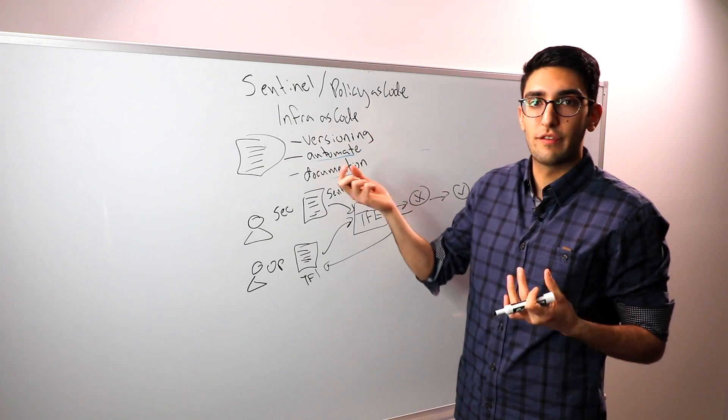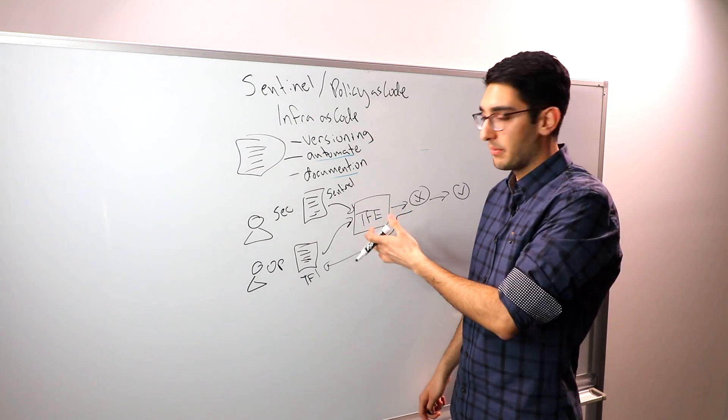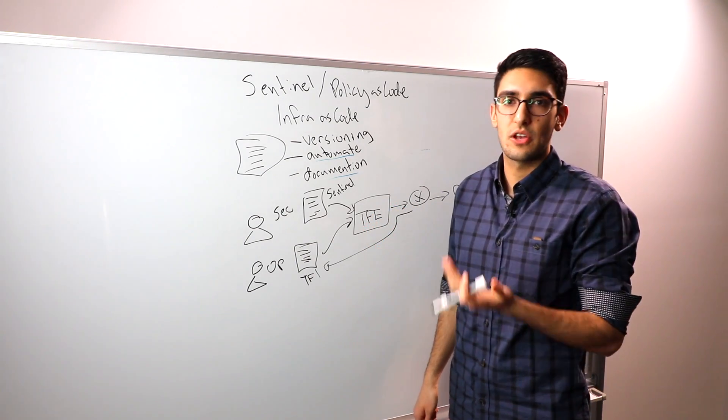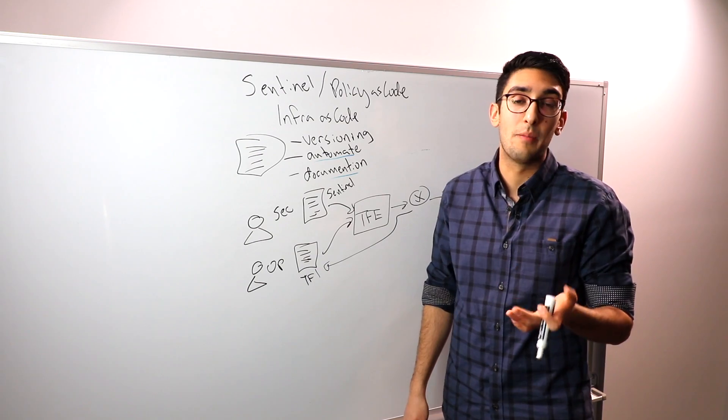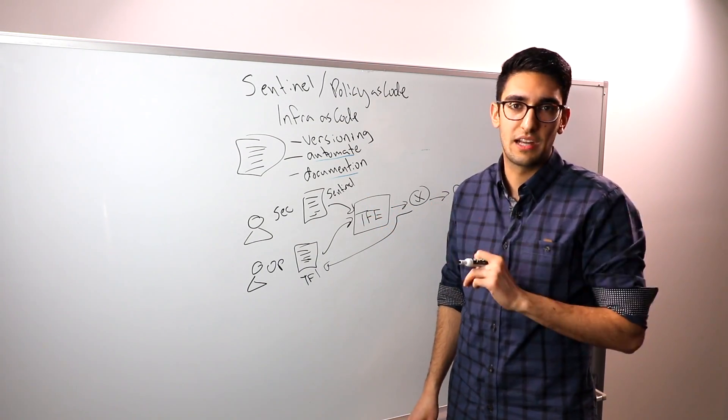Sentinel is a more general framework for doing this, and it's a tool that we've integrated across all of our tools. This is an example within Terraform Enterprise, but Sentinel is also available in Consul, Nomad, and Vault Enterprise as well, looking at really solving similar challenges of policy governance.